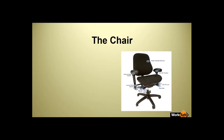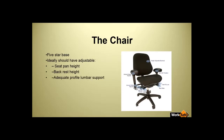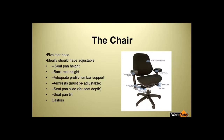I've put a picture of a fairly modern chair that has multiple adjustments. The main points: it should have a five-star base, it should ideally be completely adjustable — the seat pan height should adjust, the backrest height should adjust, there should be adequate profile lumbar support. Armrests must be adjustable if you're going to have them, otherwise it's best not to have them. A seat pan slide for seat depth is a fairly new feature for chairs and it allows adjustment for leg length. The seat pan tilt. And if you're using the chair on a hardwood floor, you need friction casters.